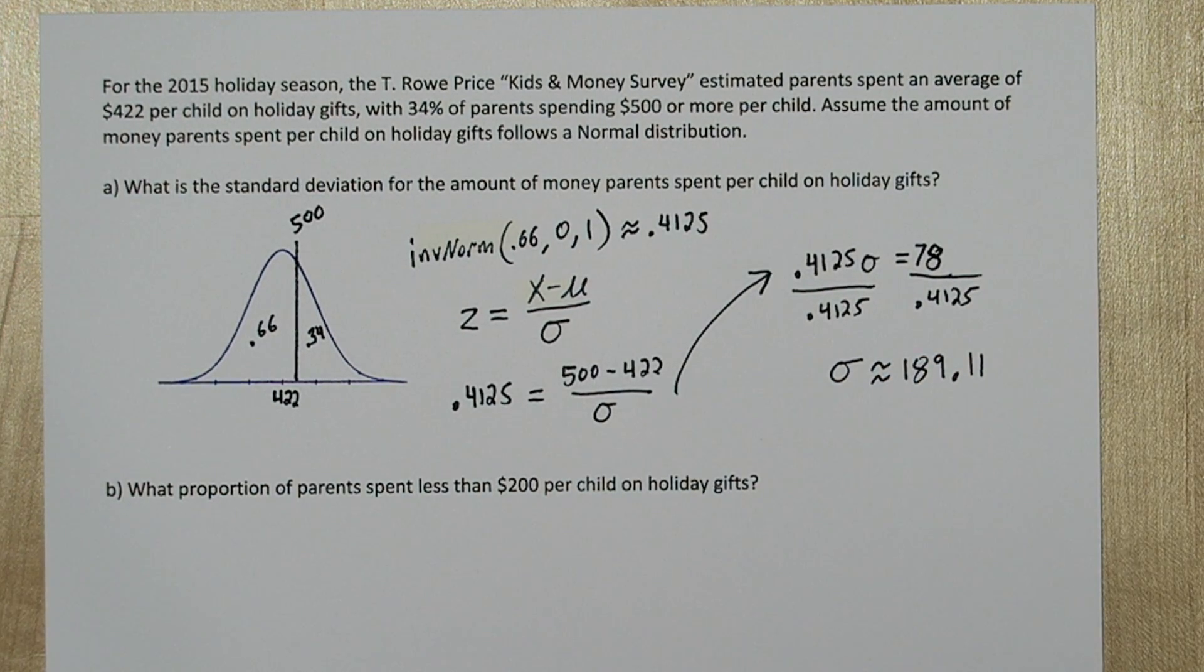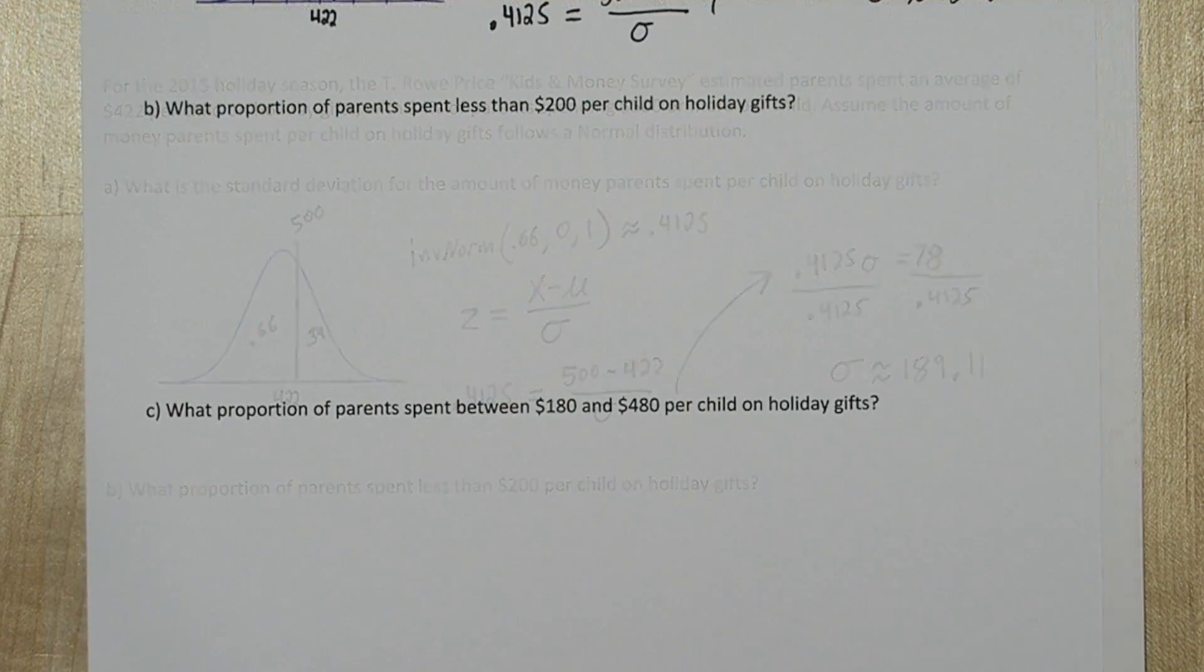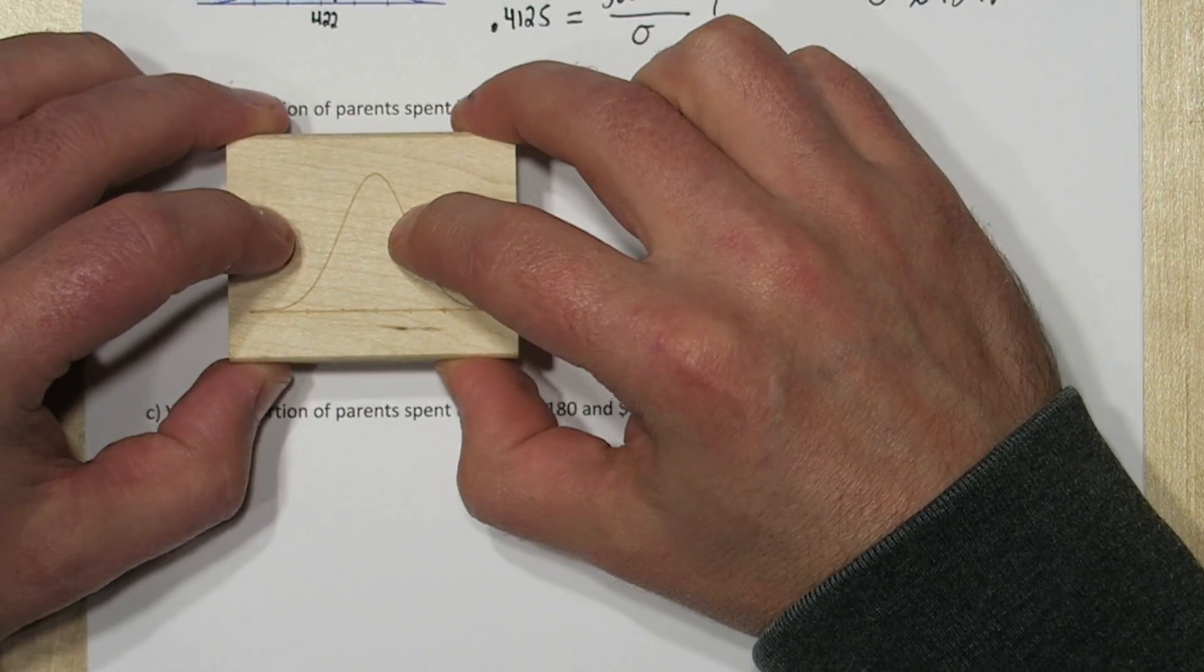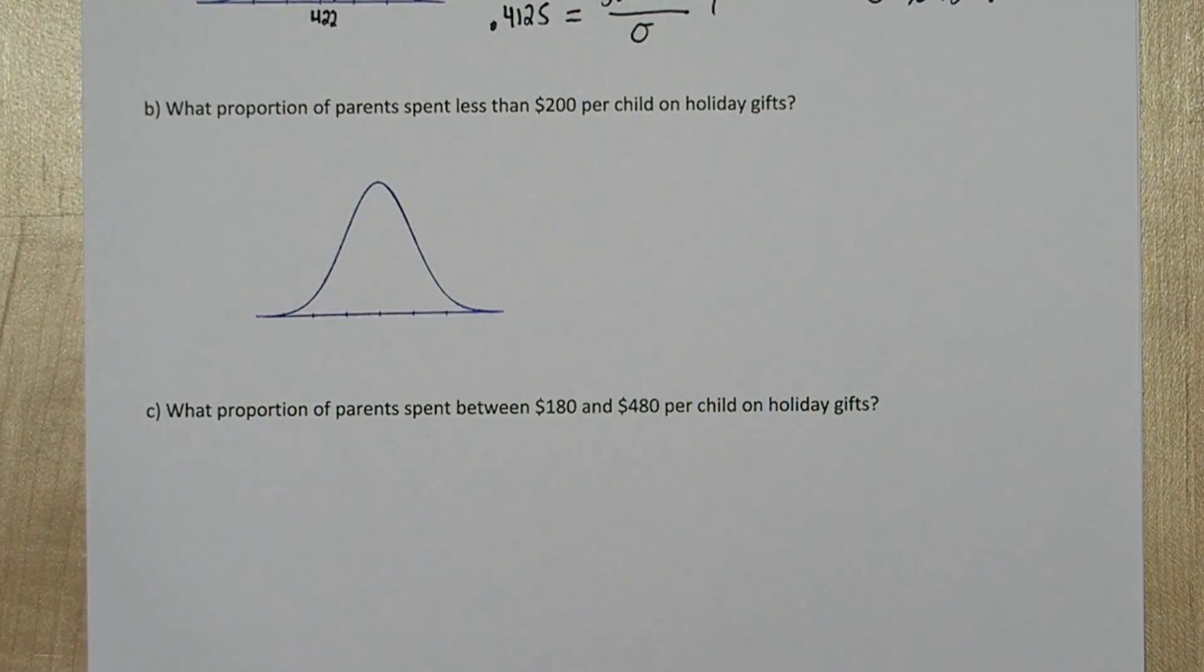So now we know the mean and the standard deviation. And that's going to help us on parts B and C. Let's stamp another normal distribution. Now in this case, we want to figure out what proportion of parents spend less than $200.